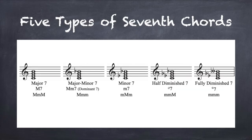There are five types of seventh chords in common use: Major seven, abbreviated uppercase M seven. Major minor seven, abbreviated uppercase M, lowercase M, seven. Minor seven, abbreviated lowercase M seven. Half diminished seven, abbreviated with a degree symbol with a slash through it and the number seven. And fully diminished seven, abbreviated with a degree symbol and the number seven.